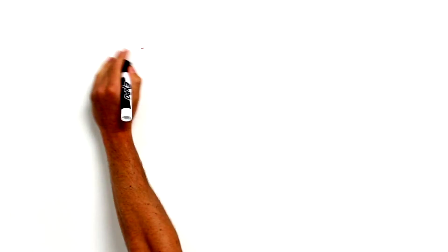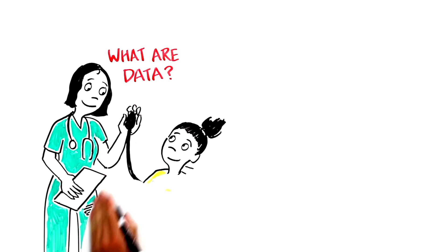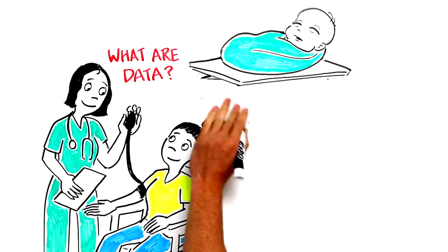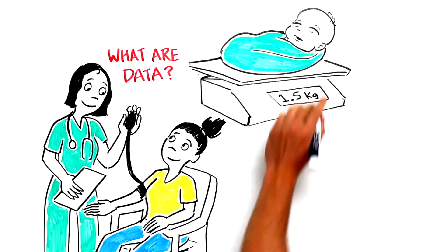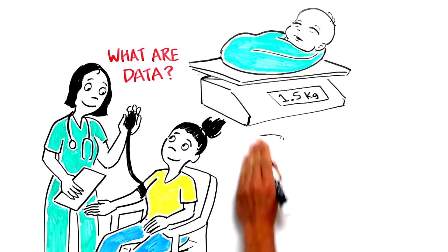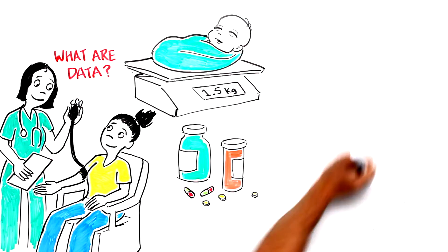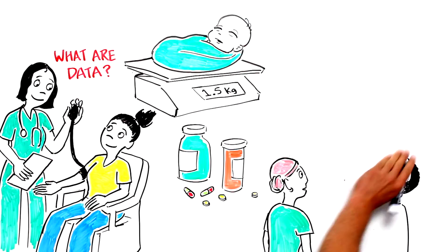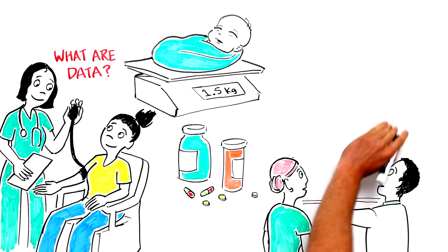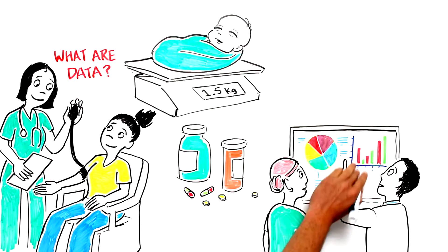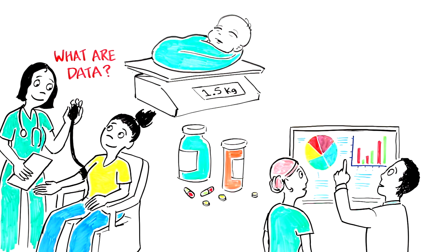But what are data? A person's blood pressure, or her last menstrual period. A baby's birth weight, or the time of its birth. Medications a patient is given. All of these are pieces of data, and together these data reflect access to care, quality of care, and the health of the system itself.